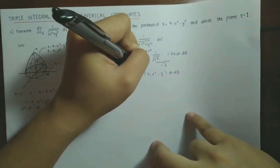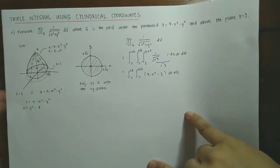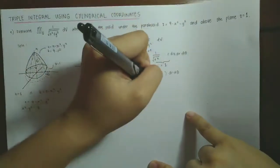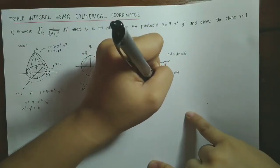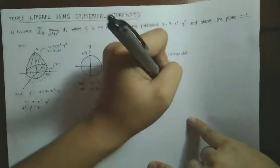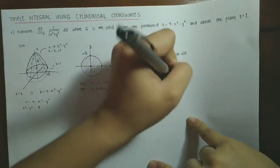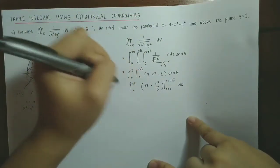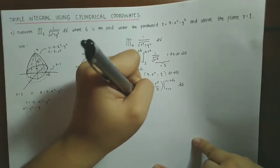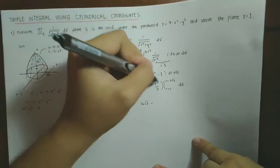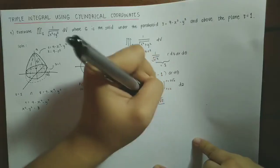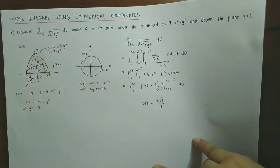Simplifying: 9 - 1 = 8, so we integrate (8 - r²) with respect to r from 0 to 2√2. Integrating: 8r - r³/3. Evaluating at r = 2√2: 8(2√2) = 16√2, and r³ = (2√2)³ = 16√2, so we get 16√2 - 16√2/3. At r = 0 the result is zero.